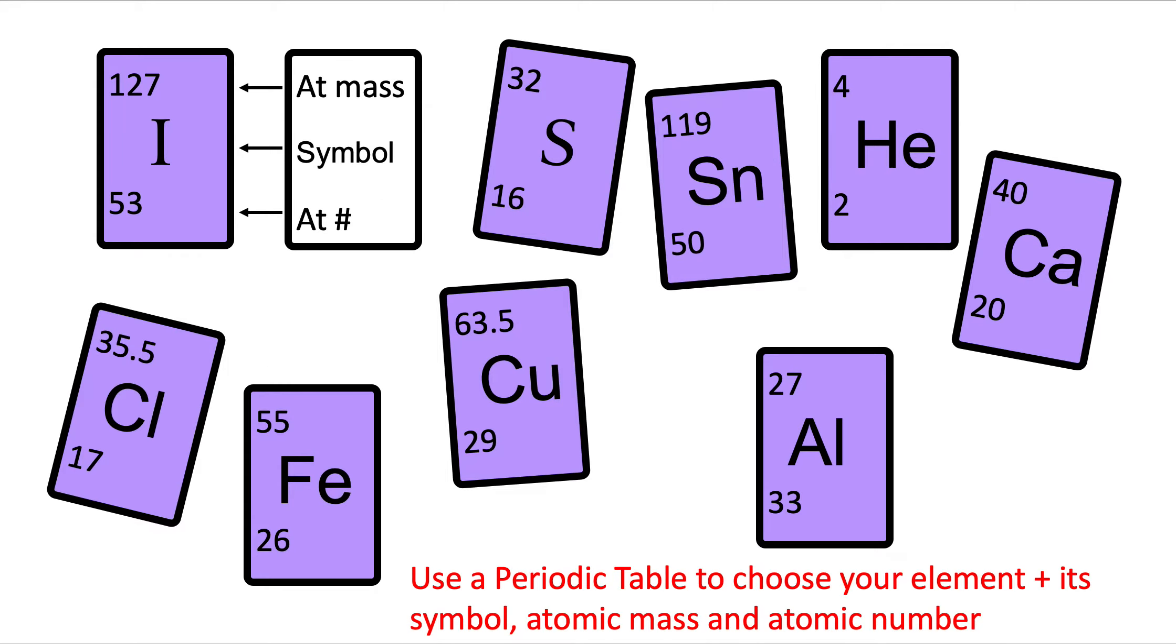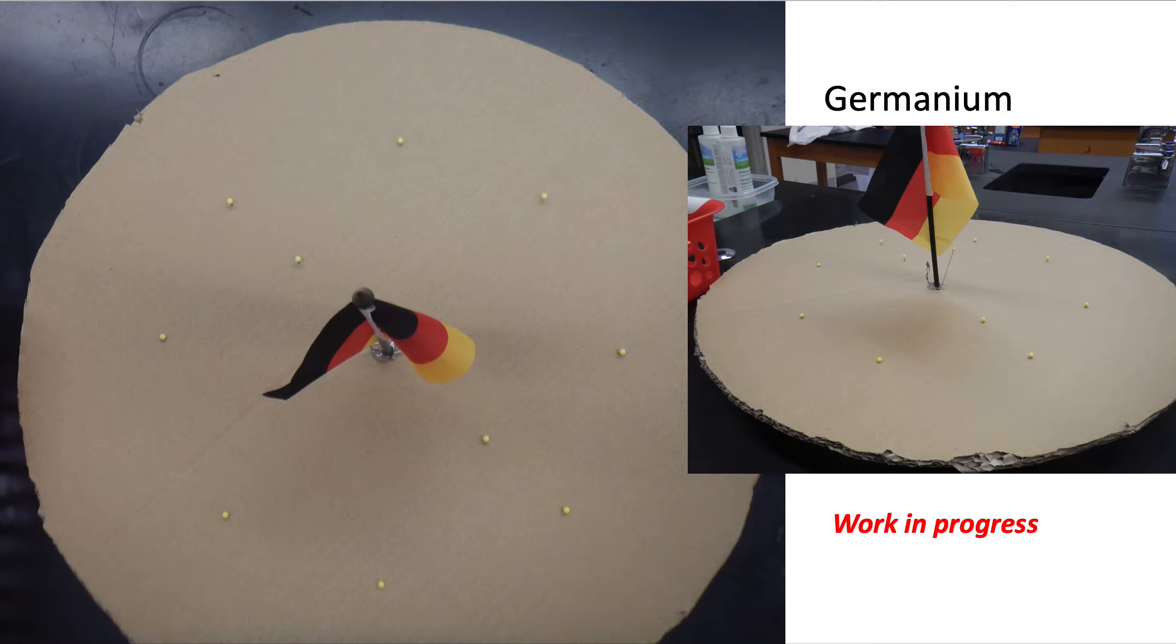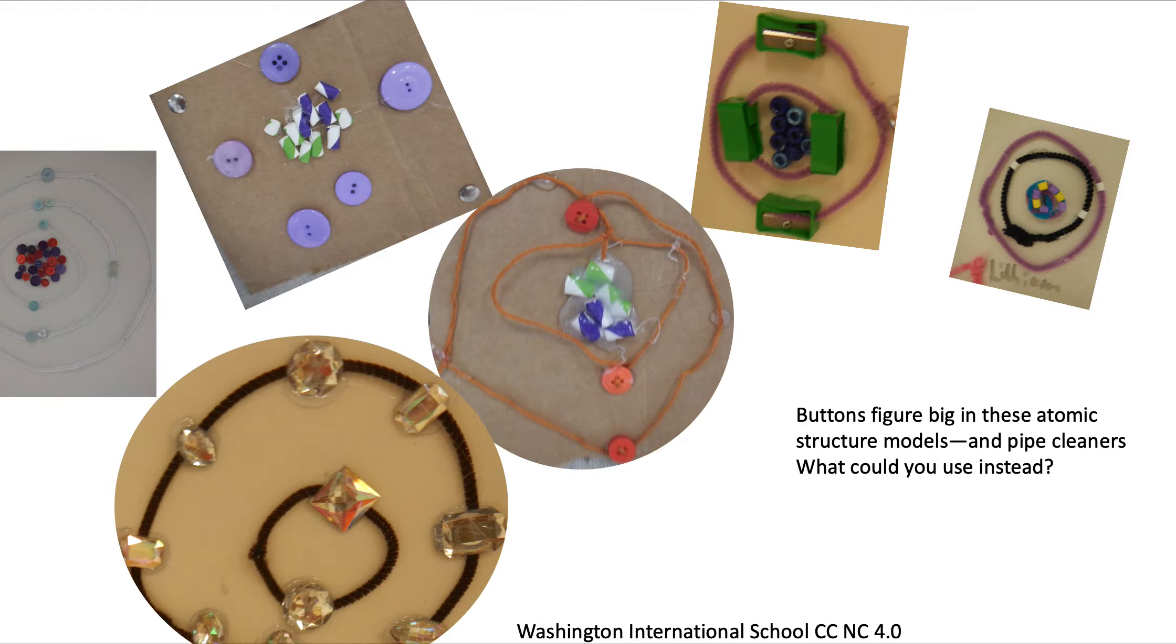Here are a few examples of element information that you can get from a periodic table. You can choose your particular element and look at the materials that are available to help you with that. For some reason, we have a German flag ready for this particular sample. Here are some other ideas—these buttons tend to figure big, but they actually have pencil sharpeners and jewels and pipe cleaners and other materials.